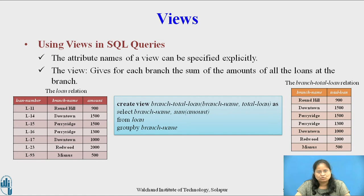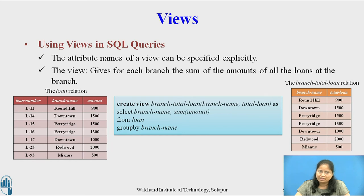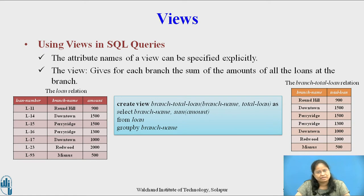The resulting relation branch_total_loan is given on the slide. At any given time, the set of tuples in the view relation is the result of evaluation of the query expression that defines the view. Thus, if a view relation is computed and stored, it may become out of date if the relations used to define it are modified. When we define a view, the database system stores the definition of the view itself rather than the result of evaluating the query expression. Whenever a view relation appears in a query, it is replaced by the stored query expression, and whenever we evaluate the query, the view relation is recomputed.